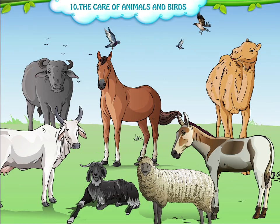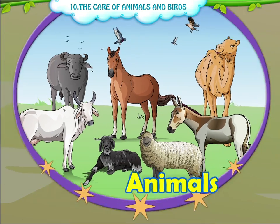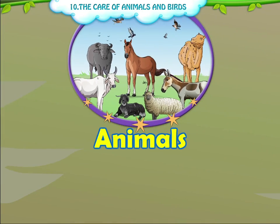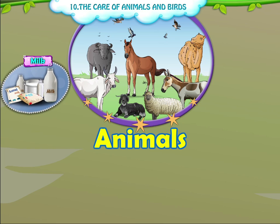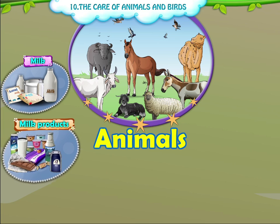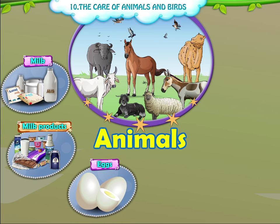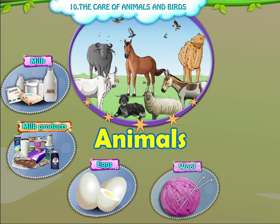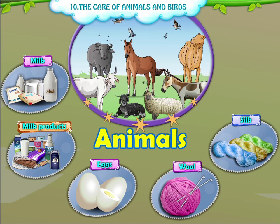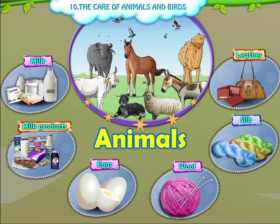Uses of Animals. Animals provide us with a variety of things such as milk, milk products, eggs, wool, silk, and leather.